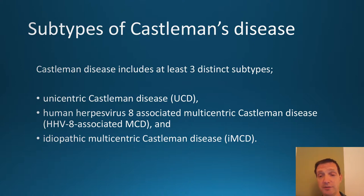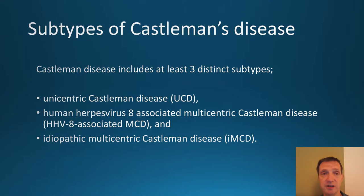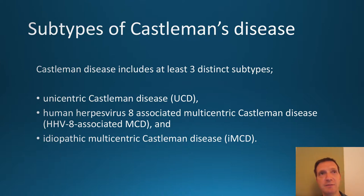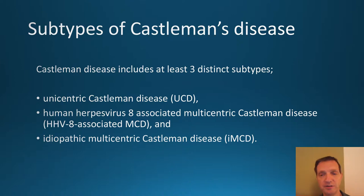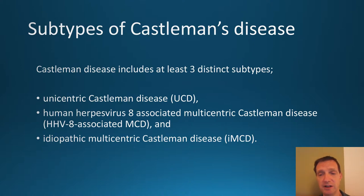HHV8 is a herpes-type virus, much the same as VZV (chickenpox), HSV (herpes simplex virus), Epstein-Barr virus, and CMV (cytomegalovirus). HHV8 is human herpes virus number 8, also known as Kaposi's sarcoma virus. This virus can cause Castleman's disease, and in particular multicentric Castleman's disease.